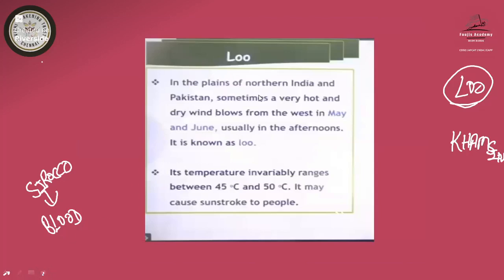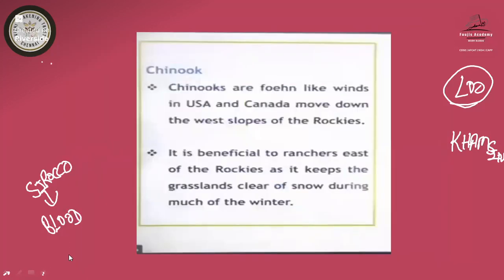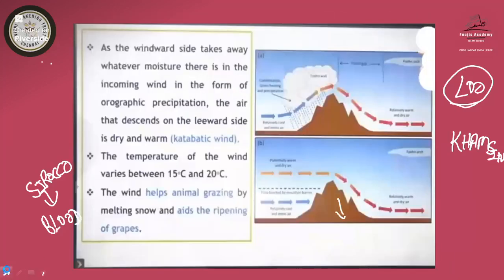These are all the parts of local winds. In India we have the Loo — that is a hot wind. Then we have the Foehn, which is also a hot wind of local importance in the Alps area. Foehn blows on the leeward side of the Alps. Mistral is a cold wind that flows from the Alps over France towards the Mediterranean Sea. Chinook, Loo, Foehn, Sirocco, Harmattan — all those are warm or hot winds. Mistral, Bora, Punas, Blizzard — all these are cold winds.